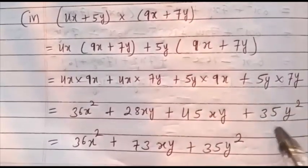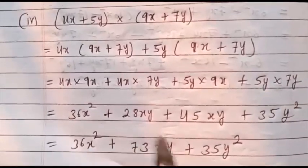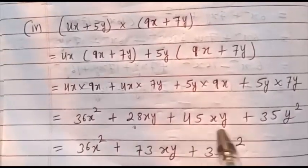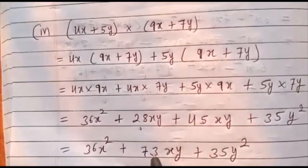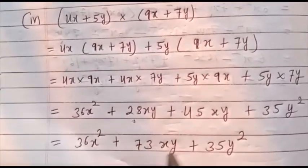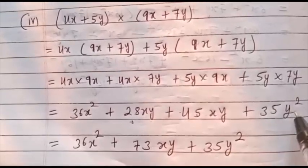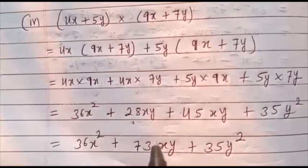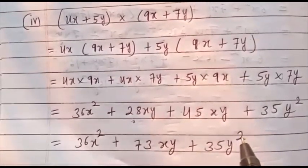5y into 7y gives 35y². Write 36x² as it is. Now add the like terms: 28xy plus 45xy. 28 plus 45 is 73xy. Plus 35y². So the answer is 36x² plus 73xy plus 35y².